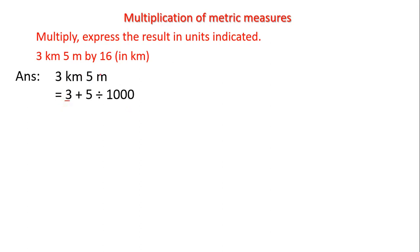We are converting from lower unit to higher unit, so we have to divide this 5 by 1000. After dividing 5 by 1000, we will get the answer as 0.005, and this 3 we will keep as it is.